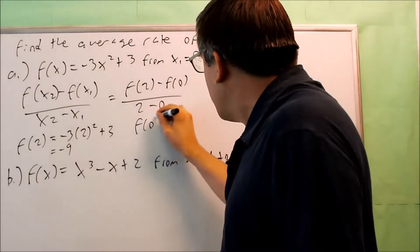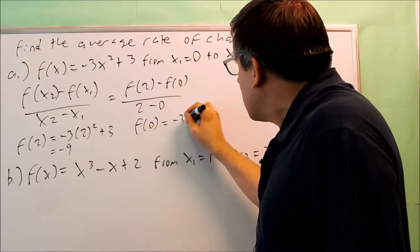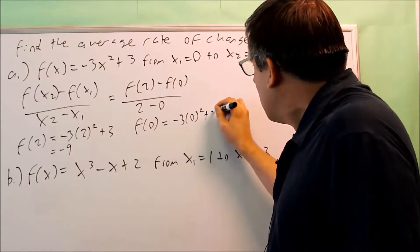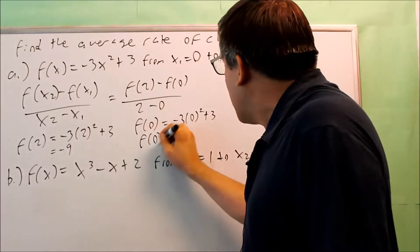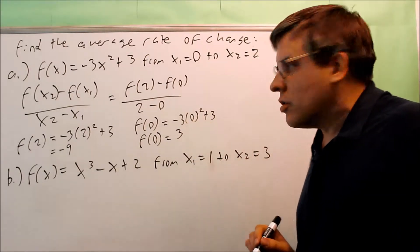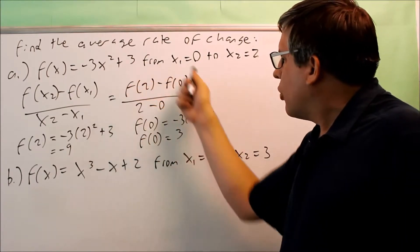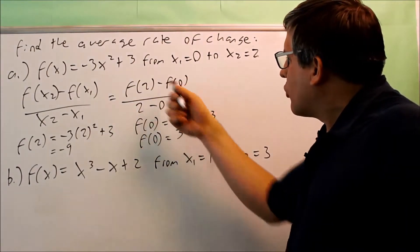Now let's do f of 0. Put 0 in for the x. And if we simplify that, we get 0 plus 3 or we end up getting 3 as the answer. So now we have two different numbers that we can put into the average rate of change formula.